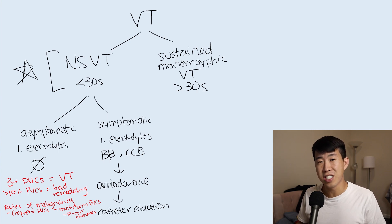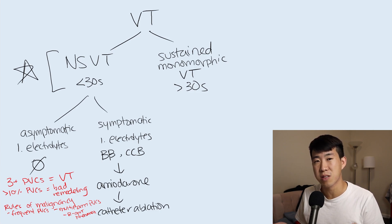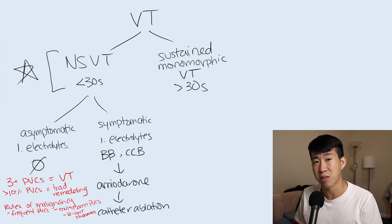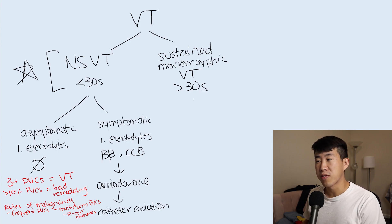That's the discussion of non-sustained VTAC. Most of the time when you get paged by the nurses, there's not much to do: check electrolytes and make sure they're replaced correctly. If the patient is asymptomatic, don't do anything. If they're symptomatic, make sure they're on a beta blocker or calcium channel blocker.